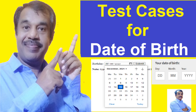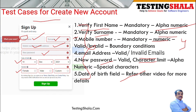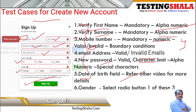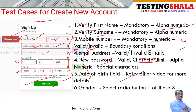The fifth field is date of birth — I've already made another video covering the different test cases for a date of birth field, which I'll link in the description. The sixth field is gender, which is a radio button that can be female, male, or a customizable option. When you click the sign-up button, if all mandatory fields are filled correctly, the new Facebook account should be created; otherwise, appropriate error messages should be shown.